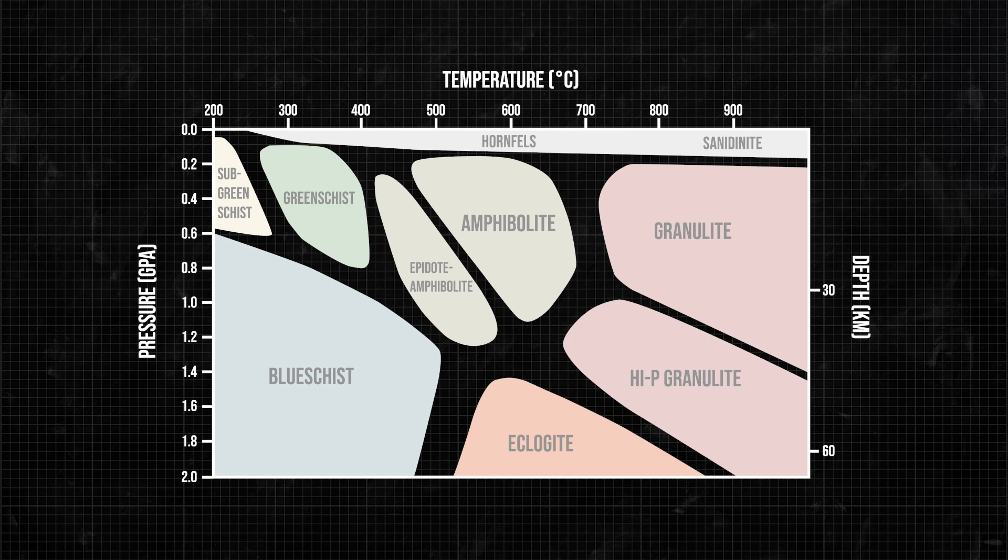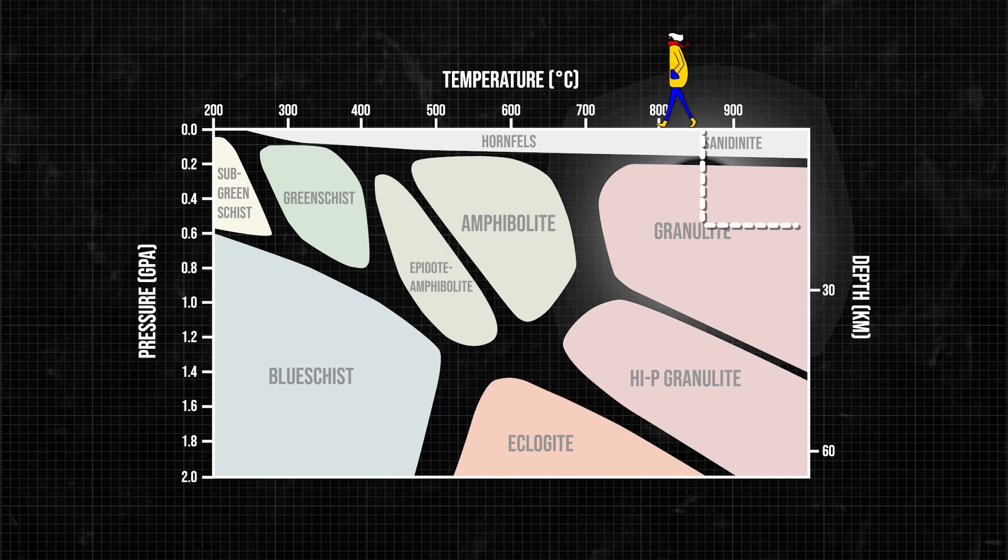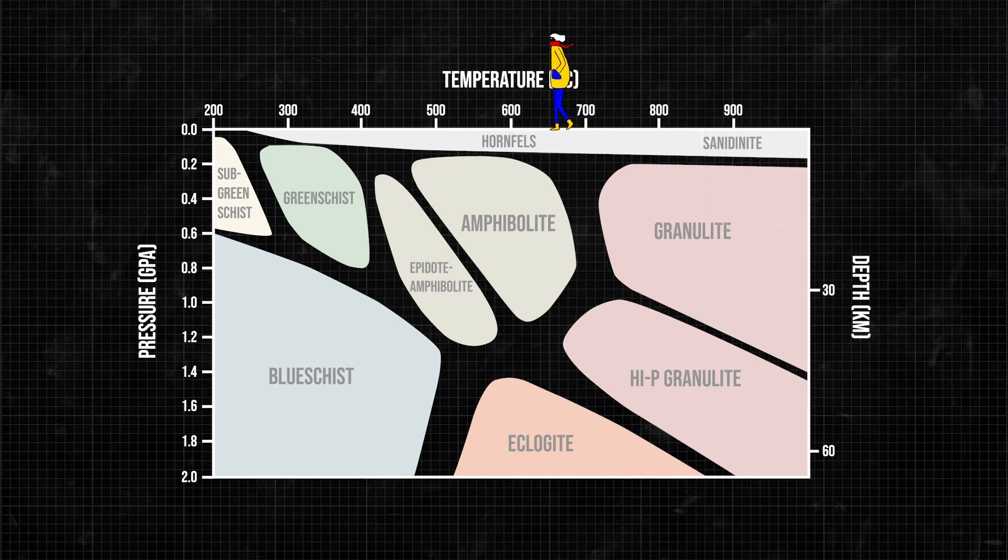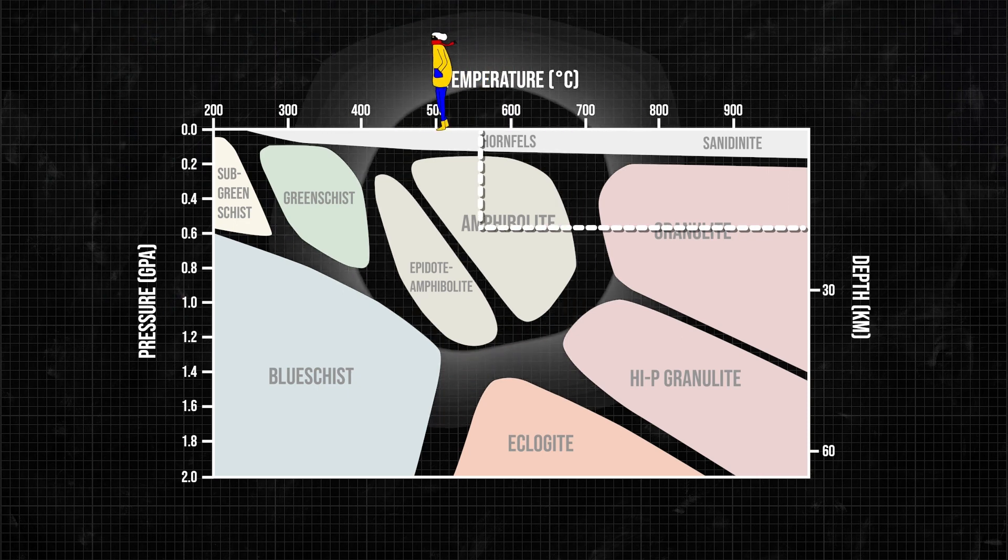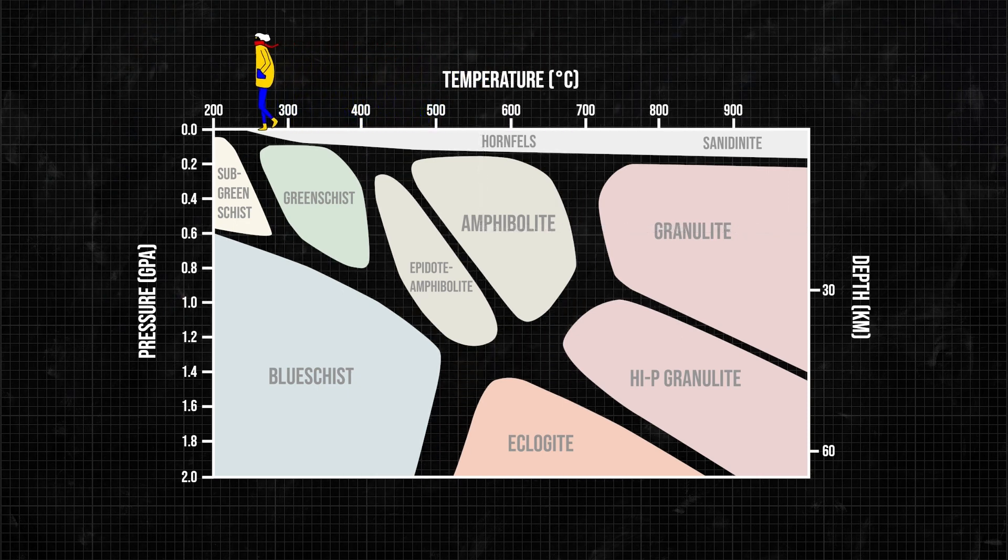One way to think about pressure-temperature space in the earth is to imagine some depth below your feet, where there is a certain temperature referred to as T, and measured in degrees centigrade. In this diagram, T is shown on the horizontal axis.